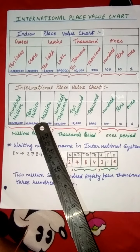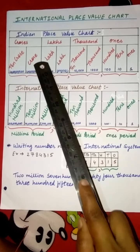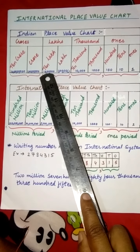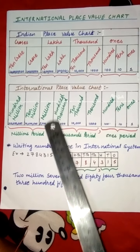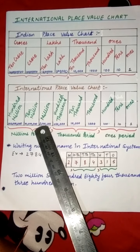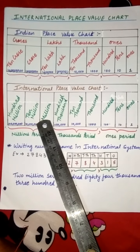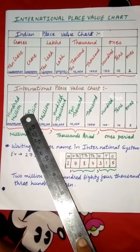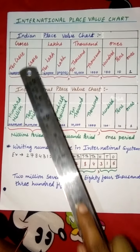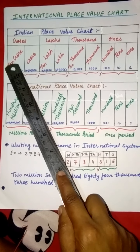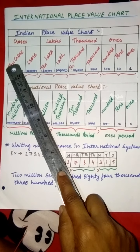The million is equal to 10 lakh. Both have 6 zeros, so million equals 10 lakh. 10 million is equal to 1 crore, and 100 million is equal to 10 crore.